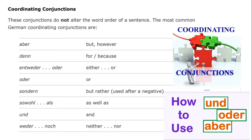If we go on to consider the coordinating conjunctions first, these are the conjunctions which do not alter the word order of the sentence. The most common German coordinating conjunctions, arranged in alphabetical order, include: "aber" (but/however), "denn" (for/because), "weder...oder" (either...or), "oder" (or), "sondern" (but/rather, used after a negative), "sowohl...als" (as well as), "und" (and), and "weder...noch" (neither...nor, the negative of either...or).